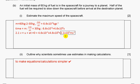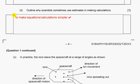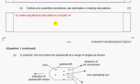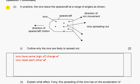Then we use section 2.1 to find final velocity. As initial velocity is zero, we get this answer with two significant figures. Why two? Because, for example, mass is with two significant figures. Outline why scientists sometimes use estimates in making calculations: to make equations simpler.